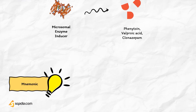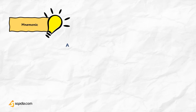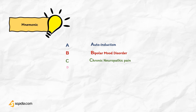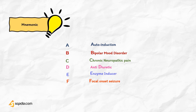For easy learning, here is a mnemonic for carbamazepine using A, B, C, D, E, F, G, H: A for auto-induction, B for bipolar mood disorder, C for chronic neuropathic pain, D for anti-diuretic, E for enzyme inducer, F for focal onset seizure, G for generalized tonic-clonic seizure, H for hemifacial spasm.